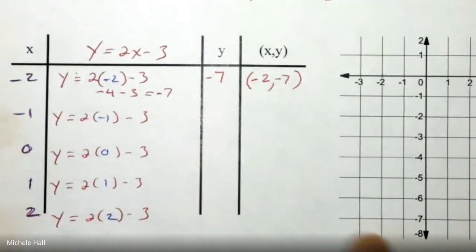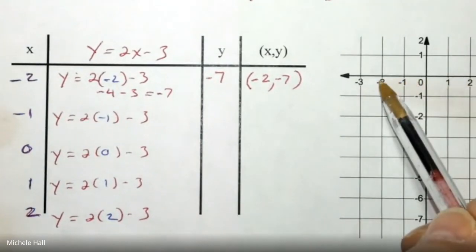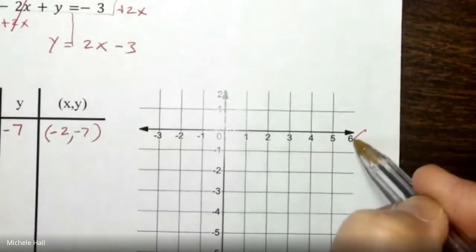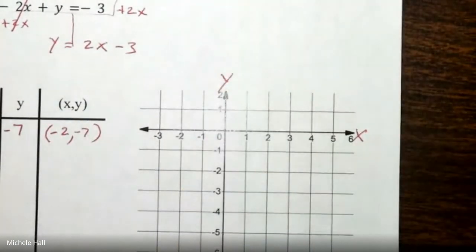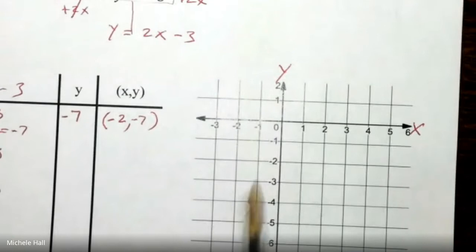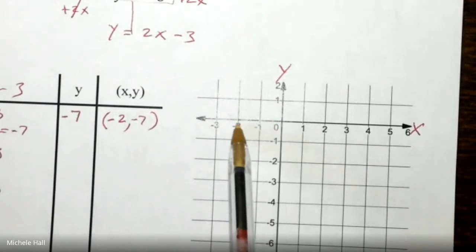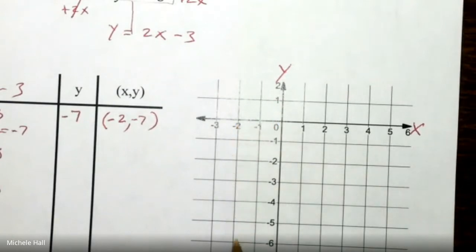And then you graphed that point. Negative 2 for X. I'm going to label my axes just to be reminded that this is my X-axis. This is my Y-axis. I'm going to go to negative 2 for X. And then I'm going to go down to negative 7 for Y and put my first point.